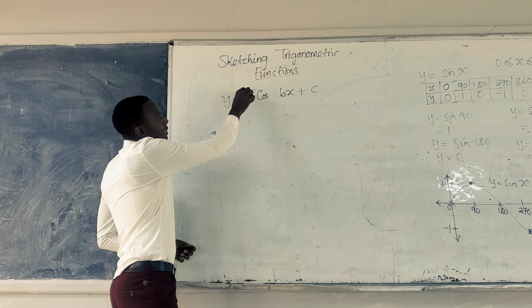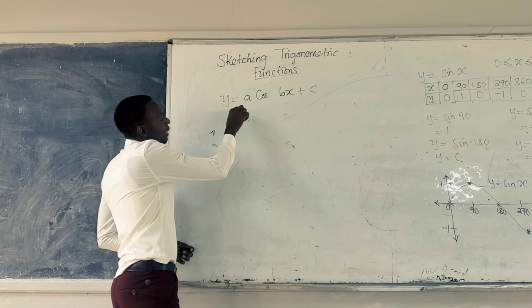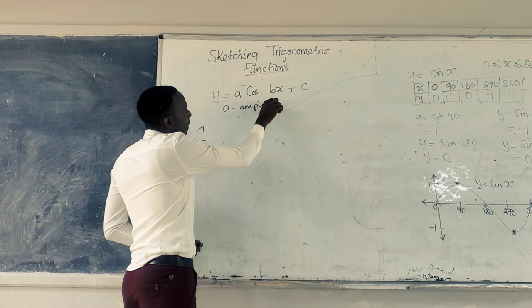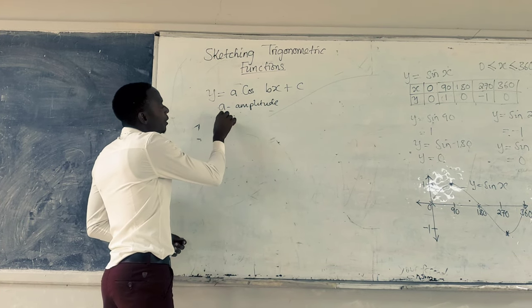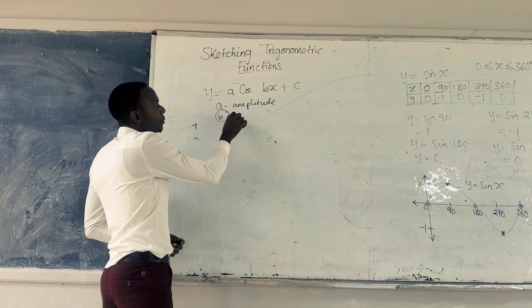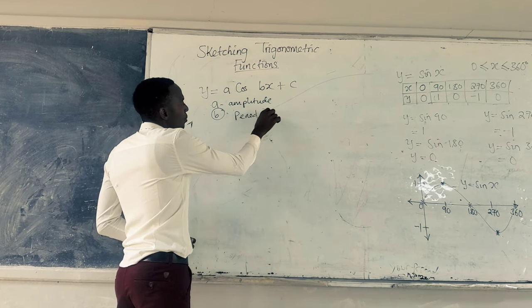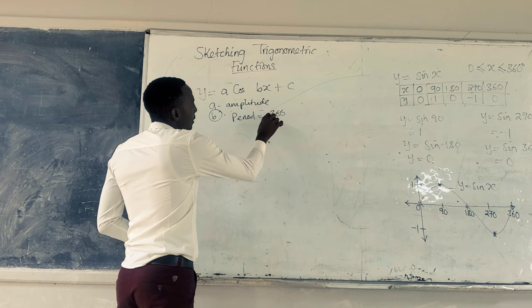Again, we can see that A is standing for the amplitude. The B helps us to find the period, which is period equals 360 divided by B.